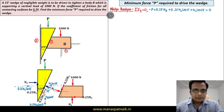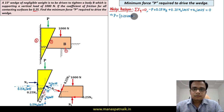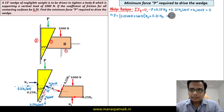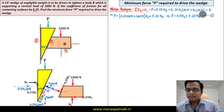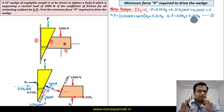Simplifying the ΣFy = 0 equation, taking N2 as common gives: P = N2·(0.25·cos15° + cos75°) + 0.25N3. Evaluating the coefficient of N2 on a calculator gives approximately 0.5. So the master equation — equation 1 — is: P = 0.5·N2 + 0.25·N3. The magnitude of P depends on two unknowns: N2 and N3.